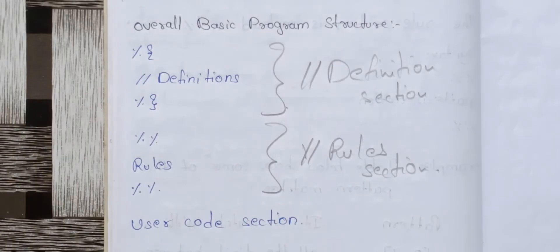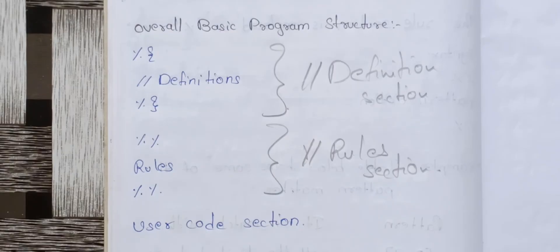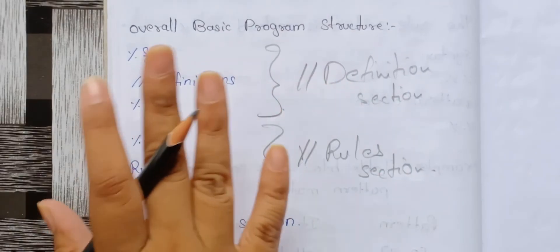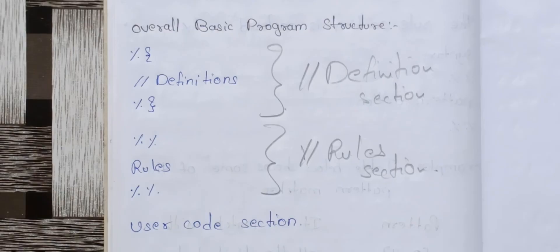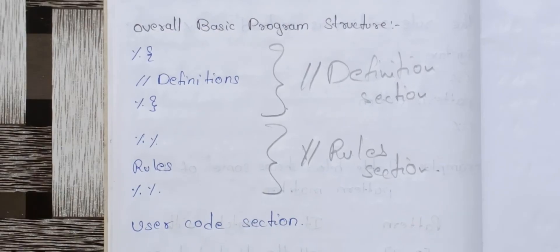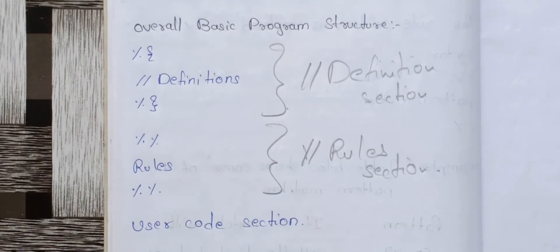So, to summarize: we explained the lexical analyzer generator Lex and the structure of a Lex program. This is a simple topic worth around 15 marks. If you have any doubts, leave them in the comment section or DM me on Instagram. Thank you.